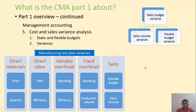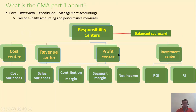Once we have a budget and people start performing against it, we'll come back and see if they have been achieving their goals. The first step is variance analysis. We analyze variances for direct materials, direct labor, variable overhead, fixed overhead, and sales, usually in comparison to a flexible budget. We then need to understand who is responsible for what — whether we exceeded expectations or fell short — and that's responsibility accounting.